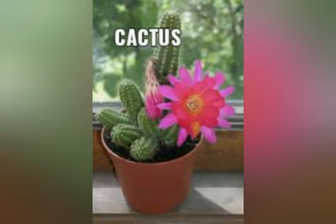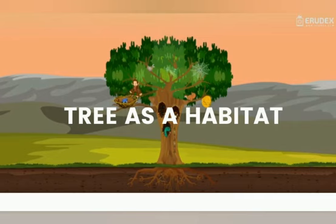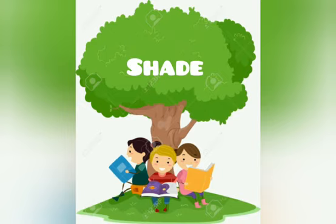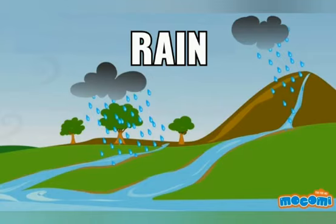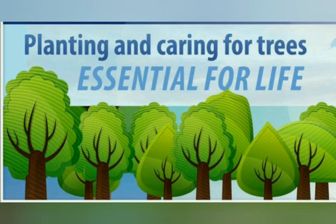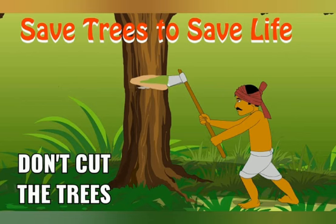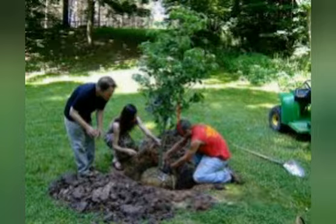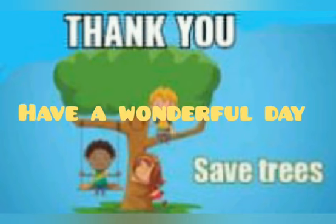At last, we are going to see trees as habitat. The tree is a home for many animals such as birds, insects, squirrels and monkeys. Trees also give us shade, clean air and rain. We should always care for plants as plants support all life in the world. So kids, we should not cut the trees. We must plant the trees and save the trees. Thank you, children. Have a wonderful day.